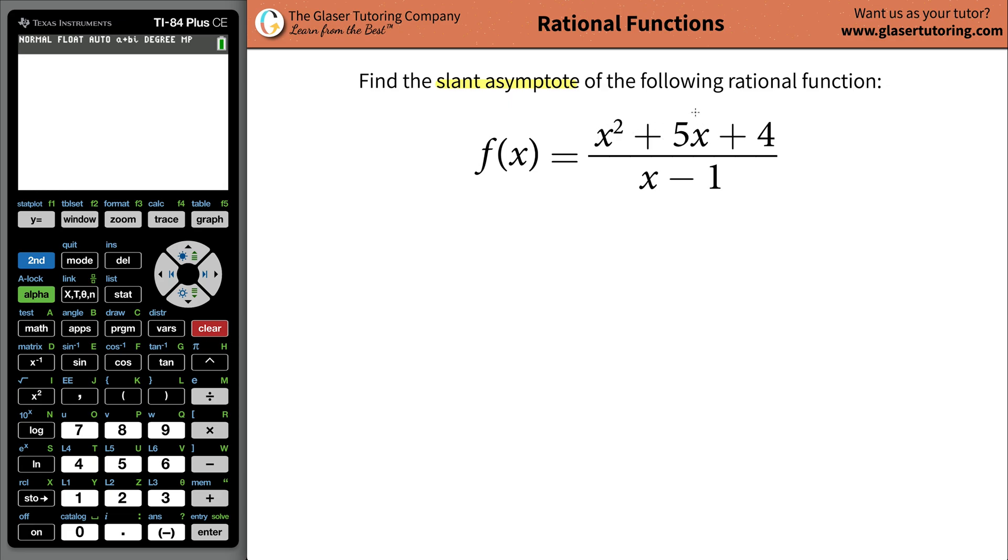Whenever you have a rational function, which is just a complicated way of saying a polynomial function being divided by a polynomial function, whenever the power of x, the highest power of x in your numerator, which is squared, which is 2, is one value greater, one unit greater than the highest power of x here in the denominator, which is 1, you'll always have a slant asymptote.